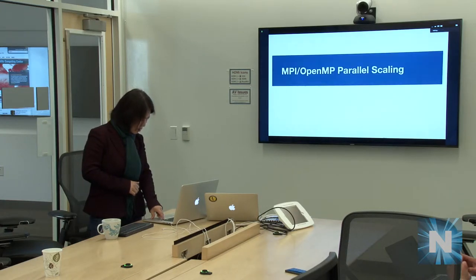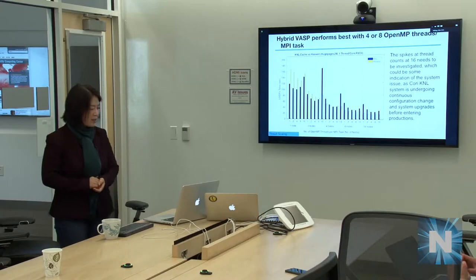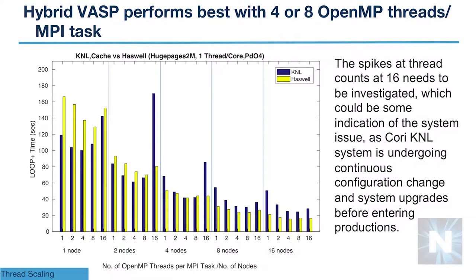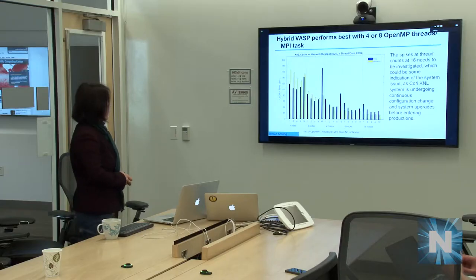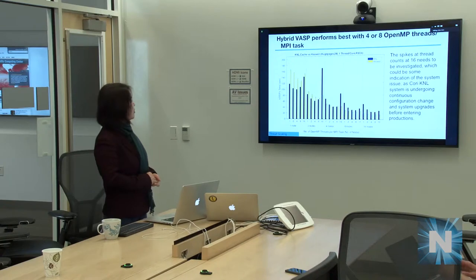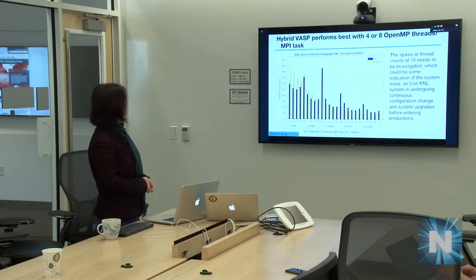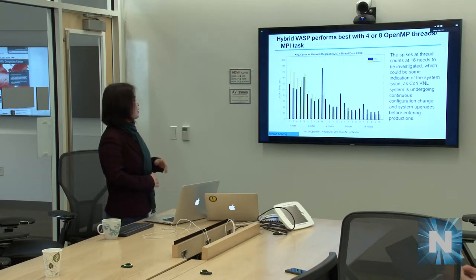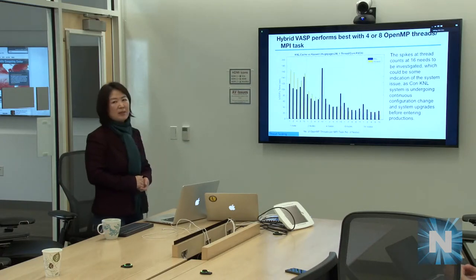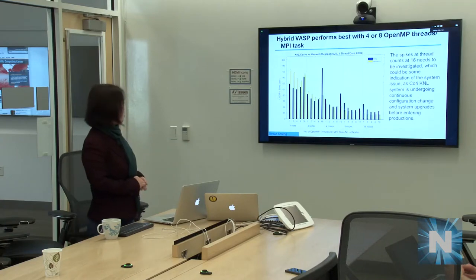We started with thread scaling. The workloads are from production workloads — not big runs, but medium runs. We tested up to 16 nodes. This is one test case which is a typical DFT calculation. We looked at thread scaling and compared with Haswell results.